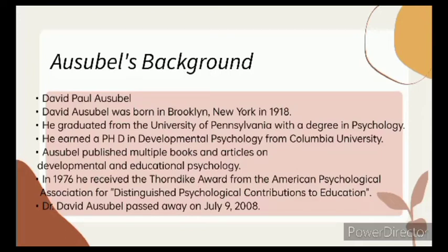He graduated from the University of Pennsylvania with a degree in Psychology. Ausubel earned a PhD in Developmental Psychology from Columbia University. Ausubel published multiple books and articles on developmental and educational psychology. He received the Thorndike Award from the American Psychological Association in 1976 for Distinguished Psychological Contribution to Education.